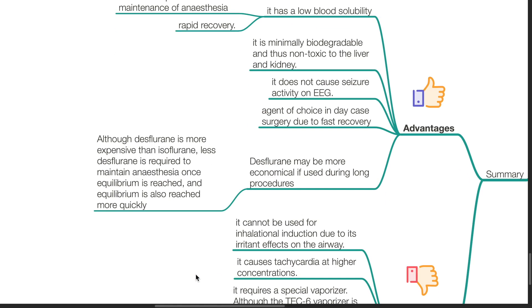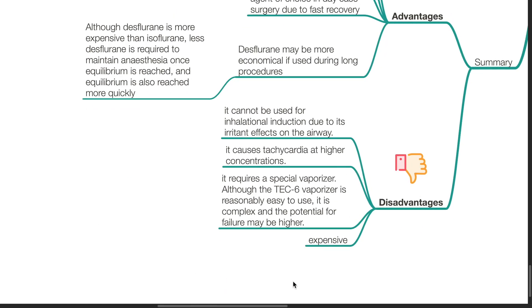Disadvantages of desflurane. It cannot be used for inhalational induction due to its irritant effects on the airway. It causes tachycardia at higher concentrations. Desflurane requires a special vaporizer — the TEC-6 — which is complex and there is potential for failure. Desflurane is more expensive compared to isoflurane or sevoflurane.